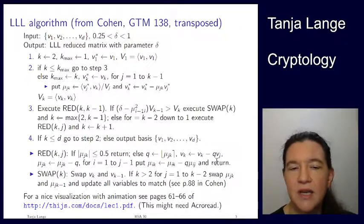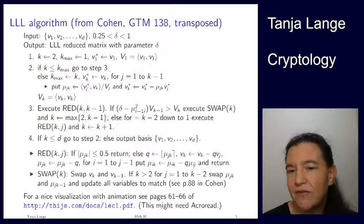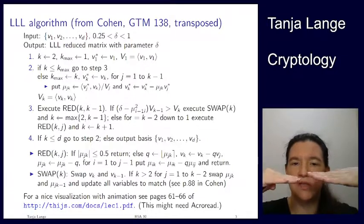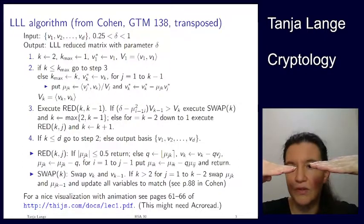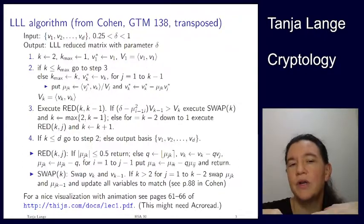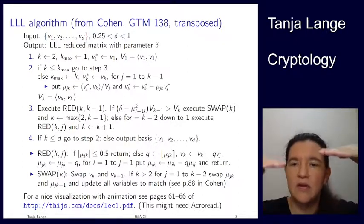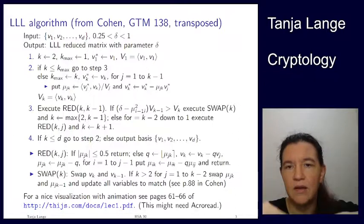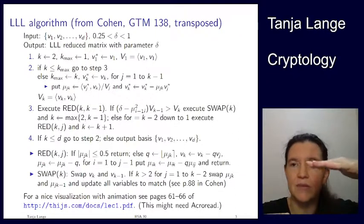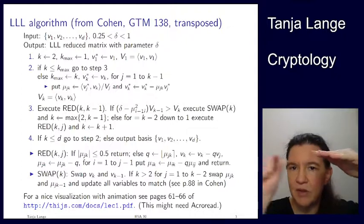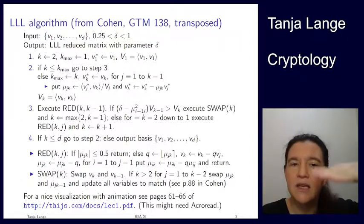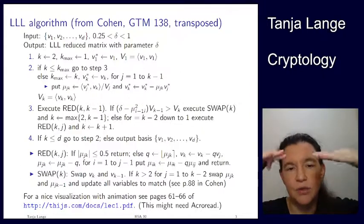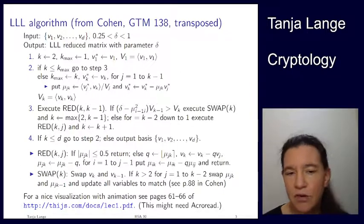After updating, sometimes you notice the previous vector is now longer than the one you used to reduce, so you swap their order. Unlike Gram-Schmidt where you go through just once, in LLL you actually backtrack — you swap and then look back to see if you can reduce further. This makes each step more expensive.